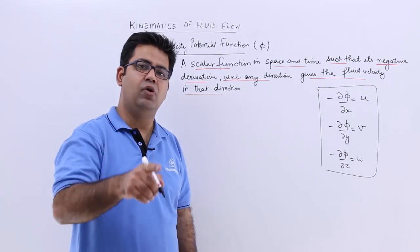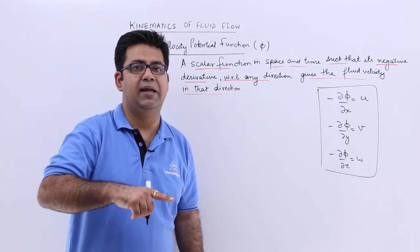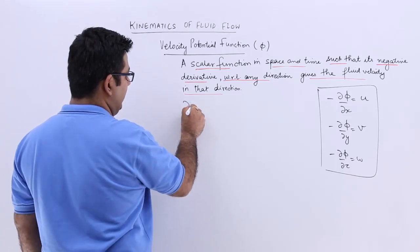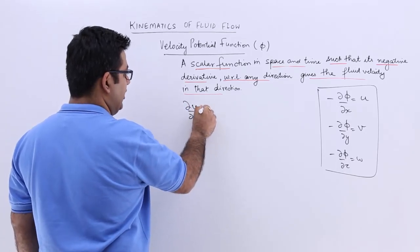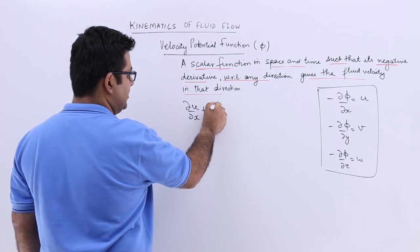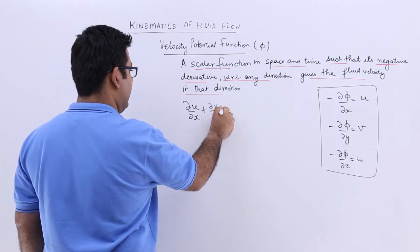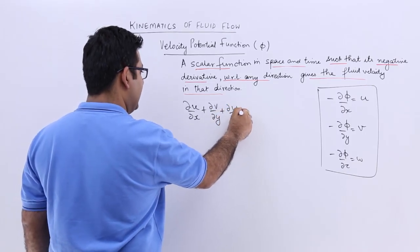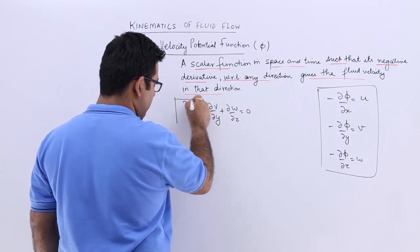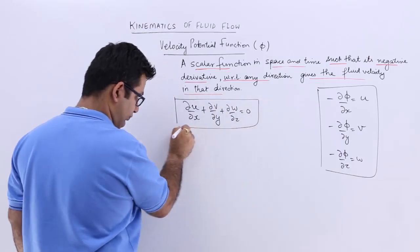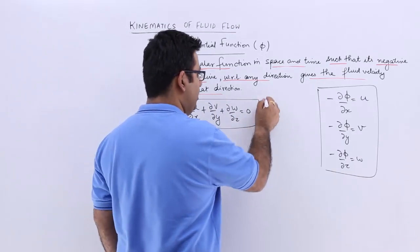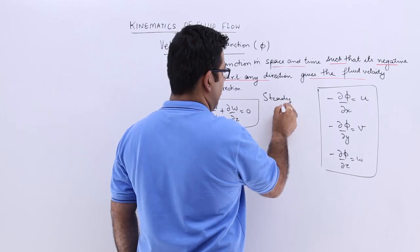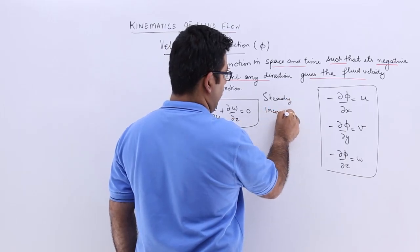Now if the flow is incompressible and steady, the continuity equation is: partial u by partial x plus partial v by partial y plus partial w by partial z equals zero. This is for steady incompressible flow.